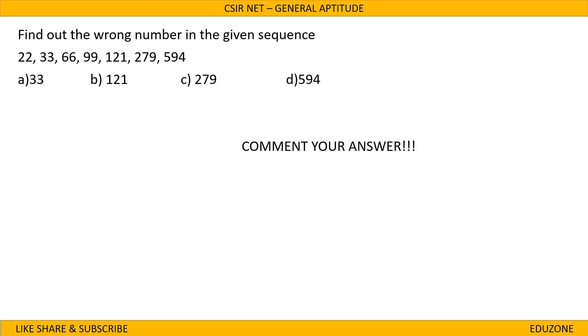Today's homework question: find the wrong number in the given sequence — 22, 33, 66, 99, 121, 279, 594. Comment your answer below.